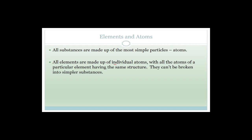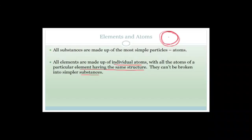All elements are made up of individual atoms, with all the atoms of a particular element having the same structure. They can't be broken up into simpler substances. Even though we know that an atom can give off electrons — for example, an atom with a proton, a neutron, and one electron in its outer energy shell — we cannot break that up without changing the actual element.